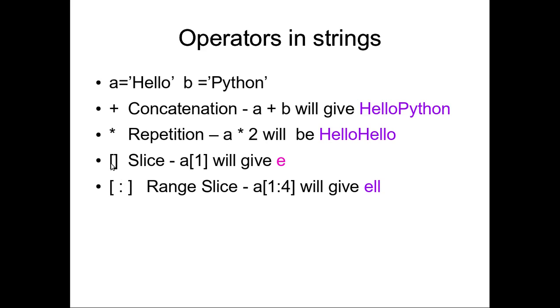And this square bracket is called the slicing operator. Where if you give a[1], this 1 will represent the index of that particular word. a of index 1, I have given, so it will start from 0. The index will start from 0, so 0 and 1, so 'e' will be printed. So you can access each and every letter from your string by using the slice operator.